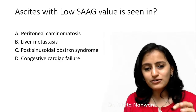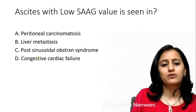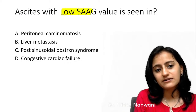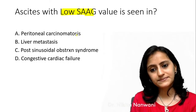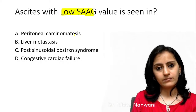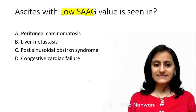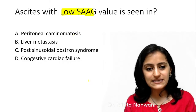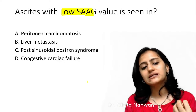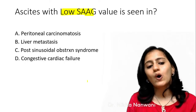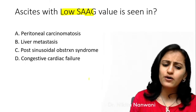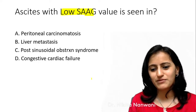First, a pre-test question: ascites with a low SAAG value is seen in which of the following? Peritoneal carcinomatosis, liver metastasis, post-sinusoidal obstruction syndrome, or congestive cardiac failure? Where do we see low SAAG? I'll tell you all the mnemonics and cheat codes to remember this topic.